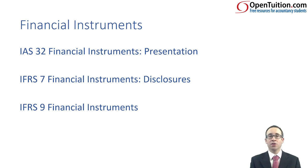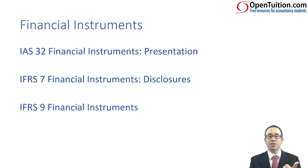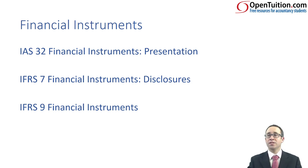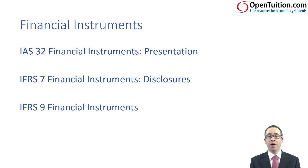IFRS 9 looks at recognition and measurement of financial assets and financial liabilities. It looks at de-recognition of financial assets and financial liabilities. It also begins to look at more complex aspects with regards to impairment of financial assets and the world of hedging. So there's quite a lot that goes on within IFRS 9.